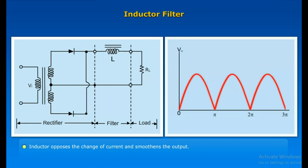The inductor opposes the change of current and smoothens the output. The choke offers high impedance to the ripple components. The choke offers zero impedance to the desired DC components. Ripple components are removed largely.